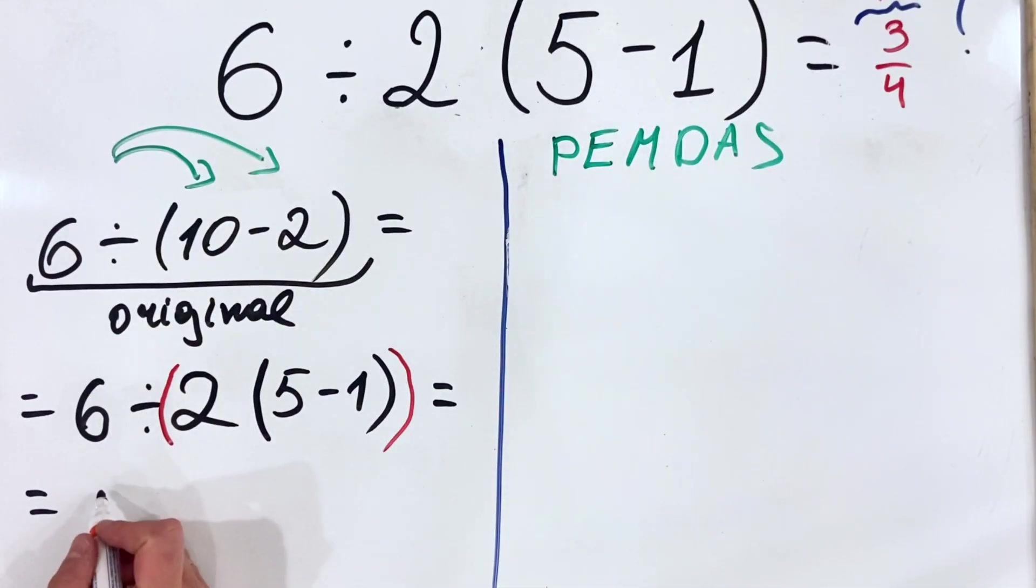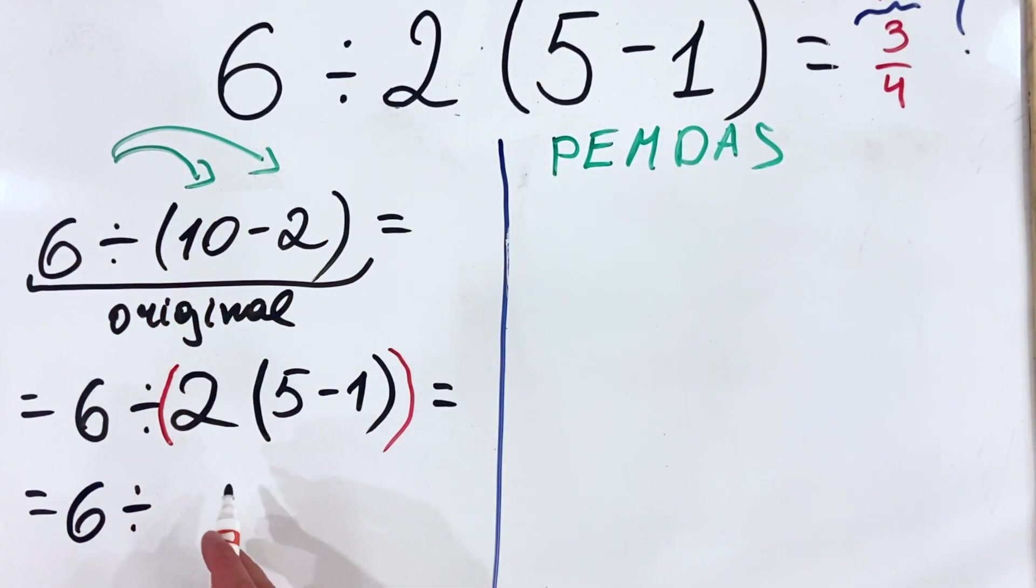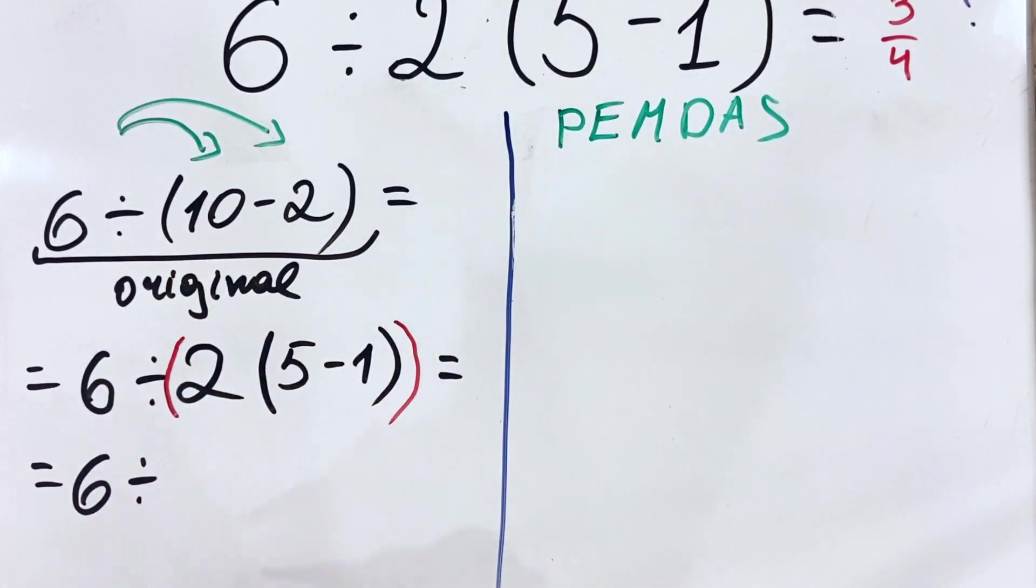So in this case, yes, we write it as per implicit multiplication, so we, then of course, we multiply, so we have 10 minus 2, 6 by 8, and it's 3/4. So that would be the correct case to do the implicit multiplication.